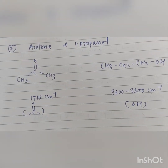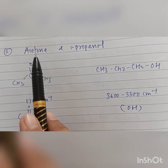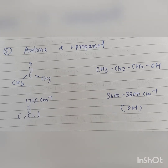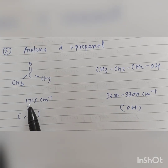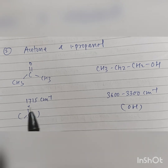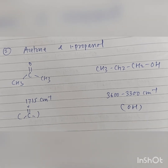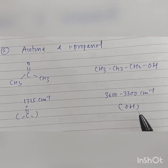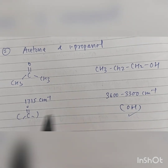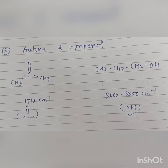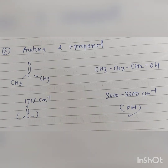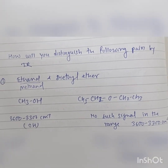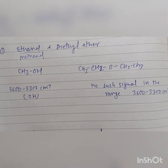We can also take a second example: acetone and 1-propanol. As there is a ketone functional group in acetone, there will be a characteristic absorption at 1715 centimeter inverse, and this peak will be absent in propanol. But in propanol, there will be a peak between 3600 to 3300 centimeter inverse — the characteristic OH absorption. This is how to distinguish a pair of compounds using IR absorption frequencies.